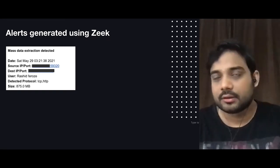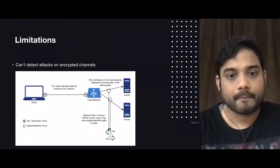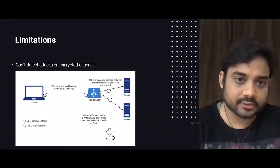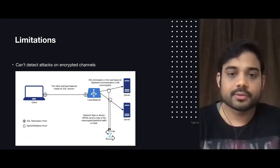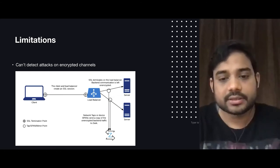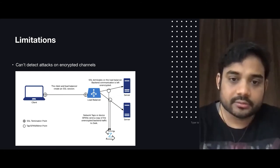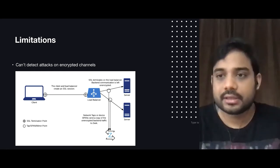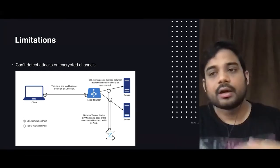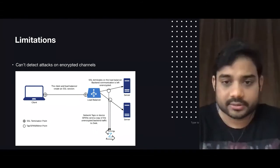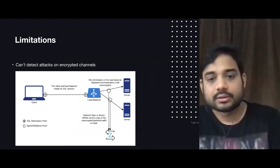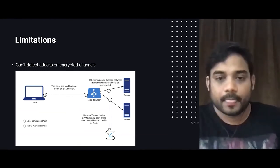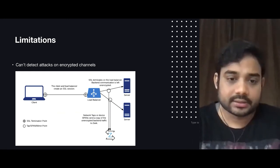It could be a legitimate employee or it could be an attacker. As for limitations, Suricata cannot detect attacks on encrypted channels because it's not possible to read what's happening there. However, it depends on how your setup is and where you are trying to listen to the traffic. A lot of times in many organizations, the SSL connection ends at the load balancer itself, and after the load balancer the traffic flows in HTTP. If you tap onto the traffic moving within your infrastructure after the load balancer, you can easily figure out what attacks are happening on your network.